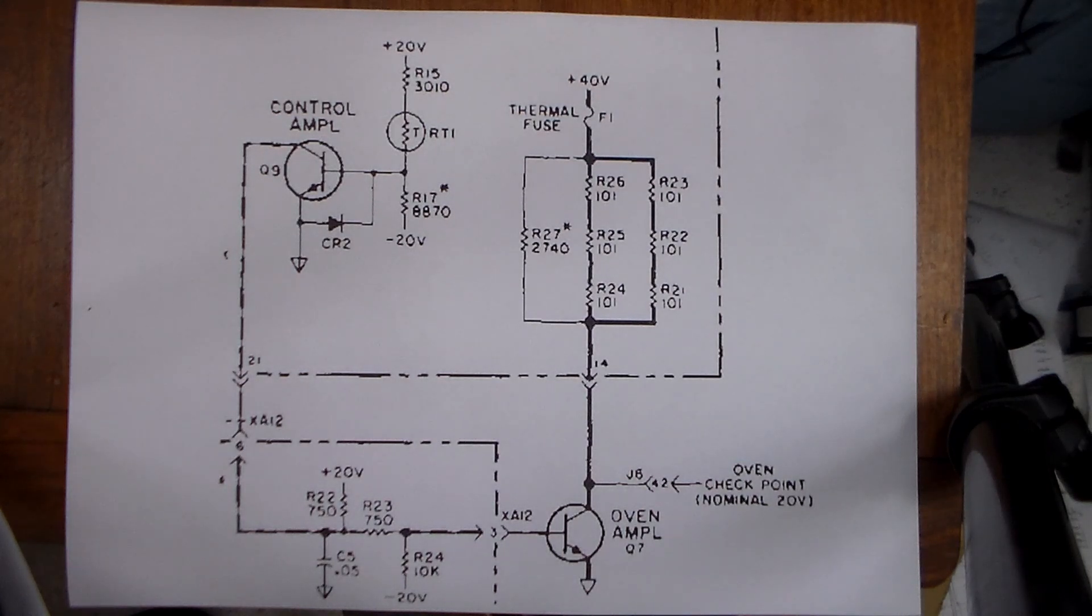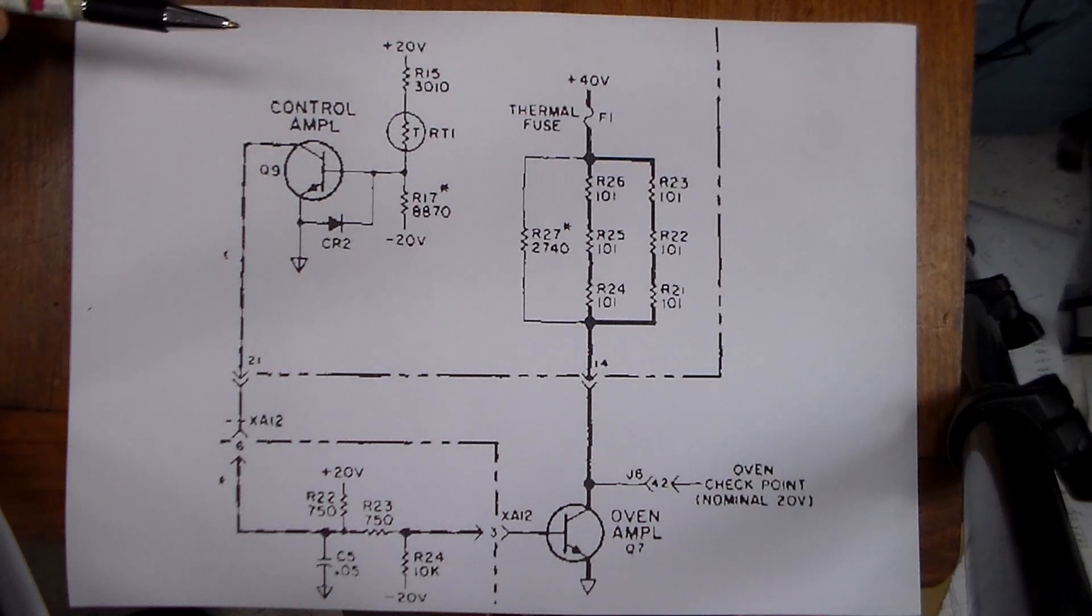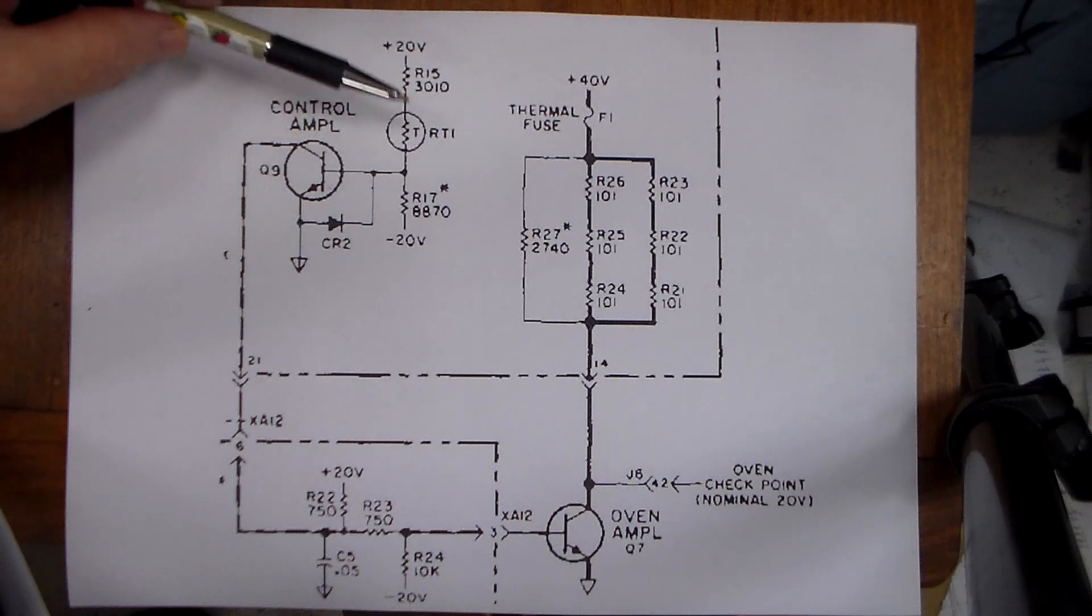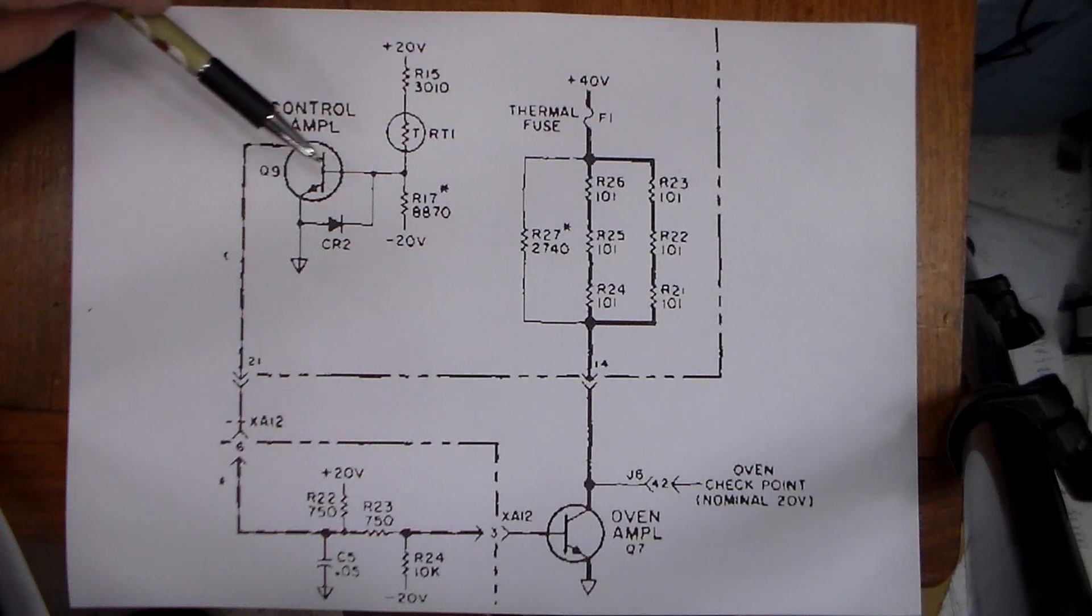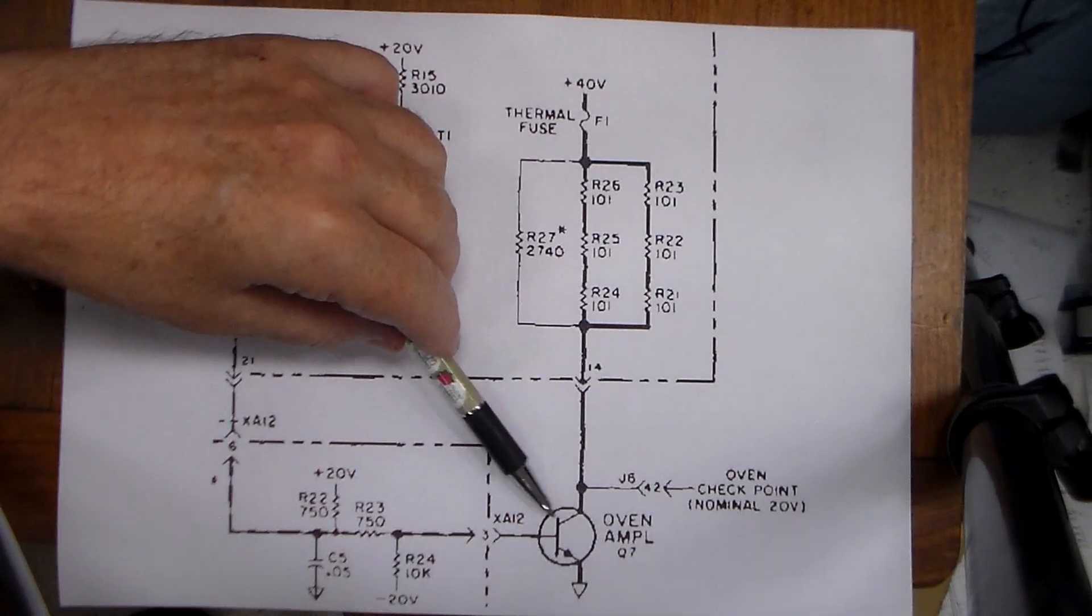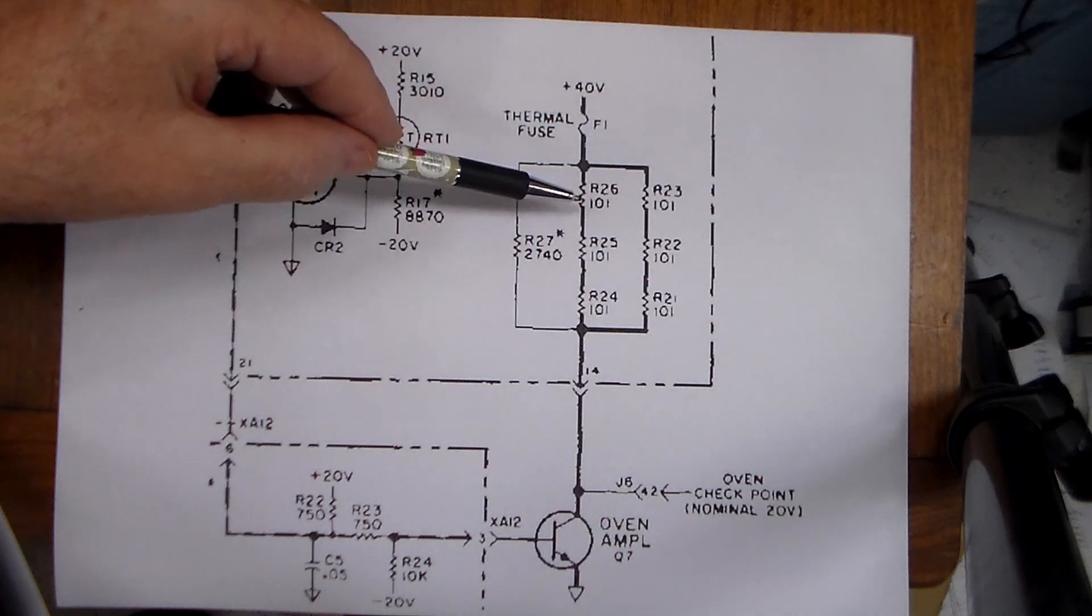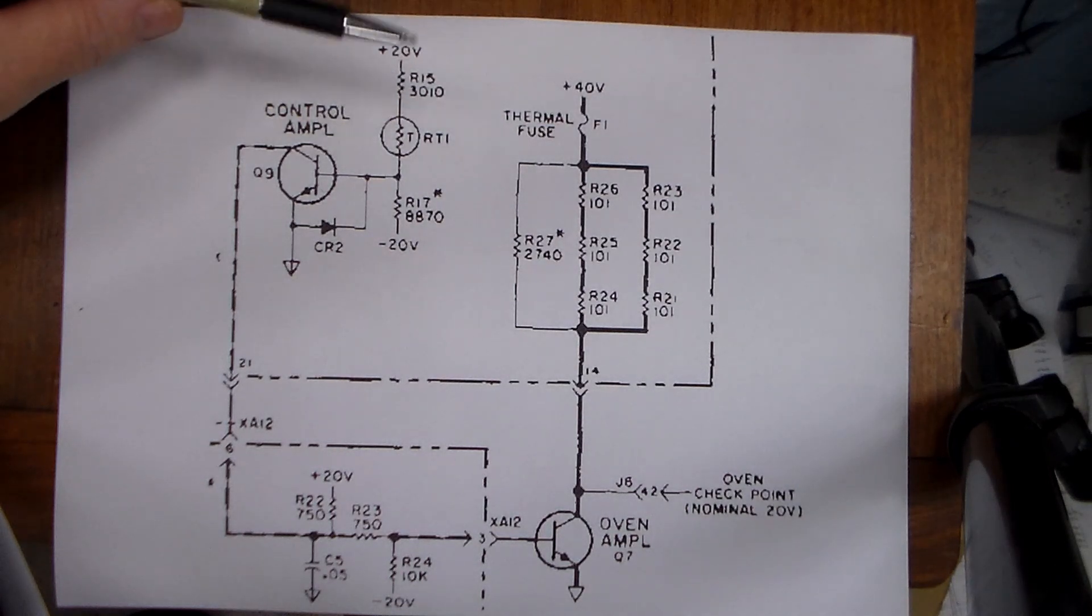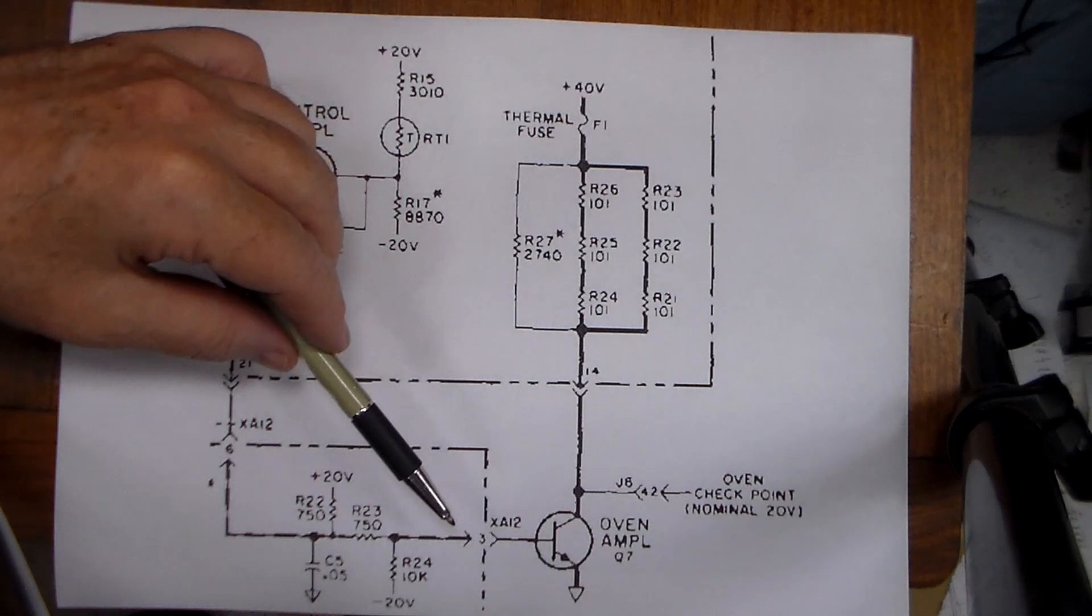What we have though, one would think, it's just a fairly simple bang-bang controller. So, it's either off or on. When you're below the set point temperature, this transistor biases up the oven amplifier transistor to turn on the load and heat the oven. And it will get past the set point temperature and it turns off.